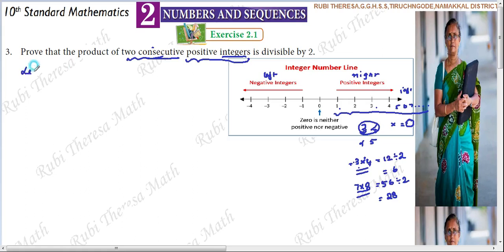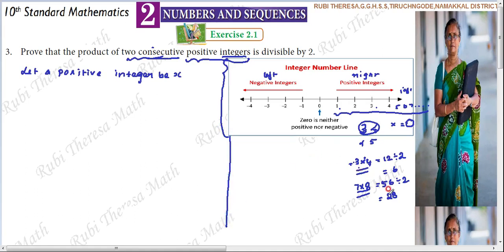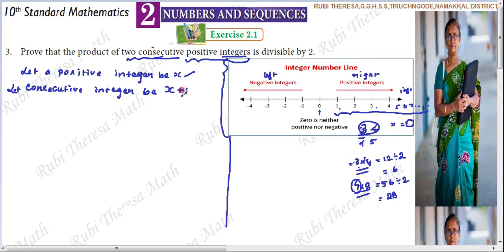Let a positive integer be x. Then the consecutive positive integer is x plus 1. For example, 3 is the number and 4 is 3 plus 1; 7 is the number and 8 is 7 plus 1. So x and x plus 1 is the general representation. In positive integers, there are two categories: odd numbers and even numbers.